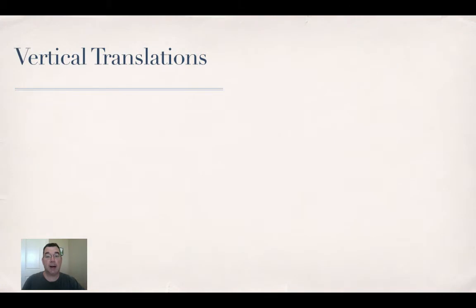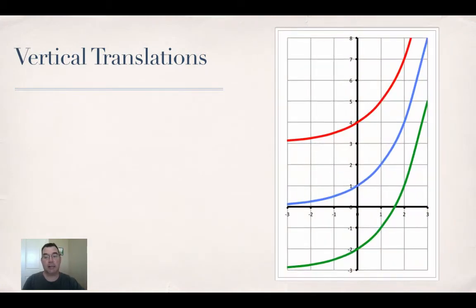Now let's talk about how I can move that graph around. The first way is by vertical translation. So you see there's our parent graph, the blue one, and then the red one is that same graph shifted up by 3, and the green one is the original graph shifted down by 3. So the blue graph is our y equals 2 to the x. The red graph is y equals 2 to the x plus 3, and the green one is y equals 2 to the x minus 3.